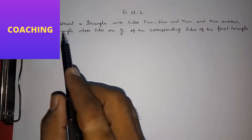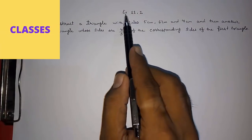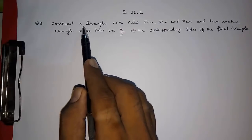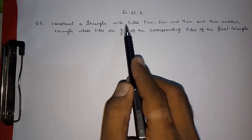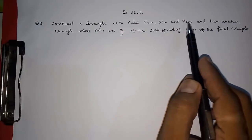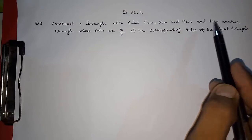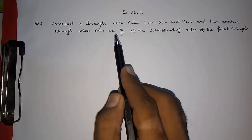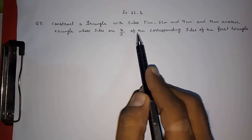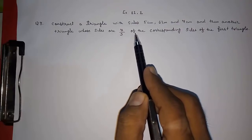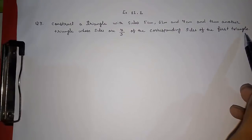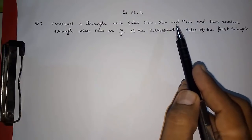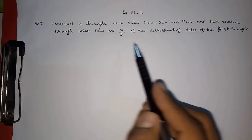Hello friends, today we are going to study exercise 11.1, question number 3: constructing a triangle with sides 5 centimeters, 6 centimeters, and 7 centimeters, and another triangle whose sides are 7/5 of the corresponding sides of the first triangle. So first we have to draw a triangle, and then draw another triangle based on it.